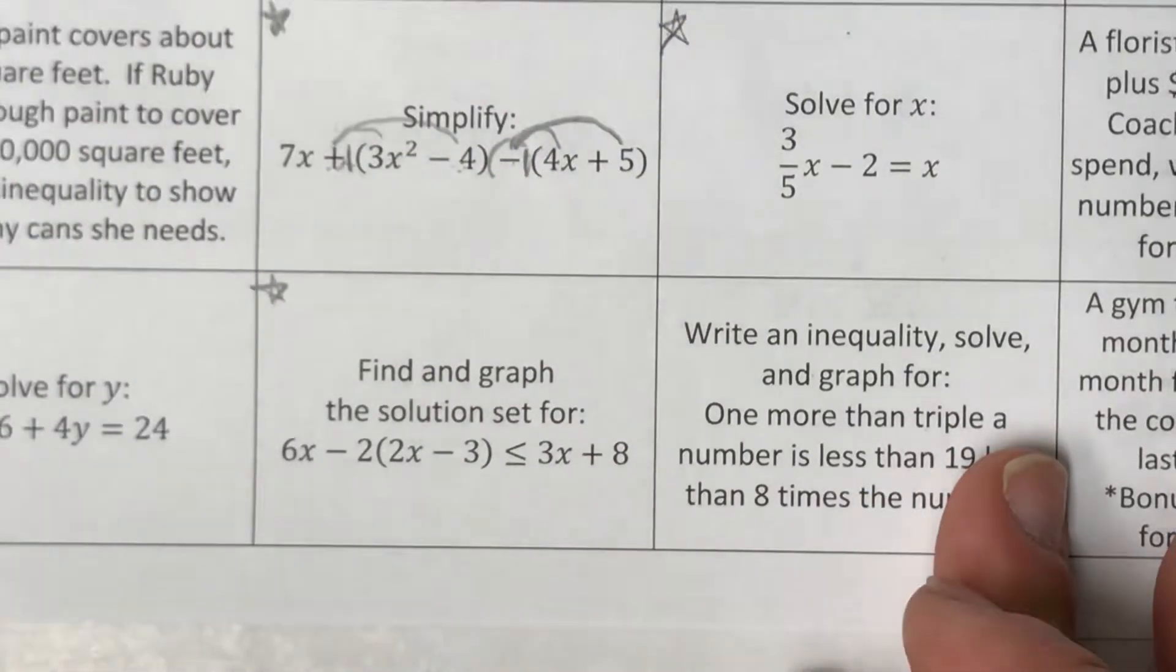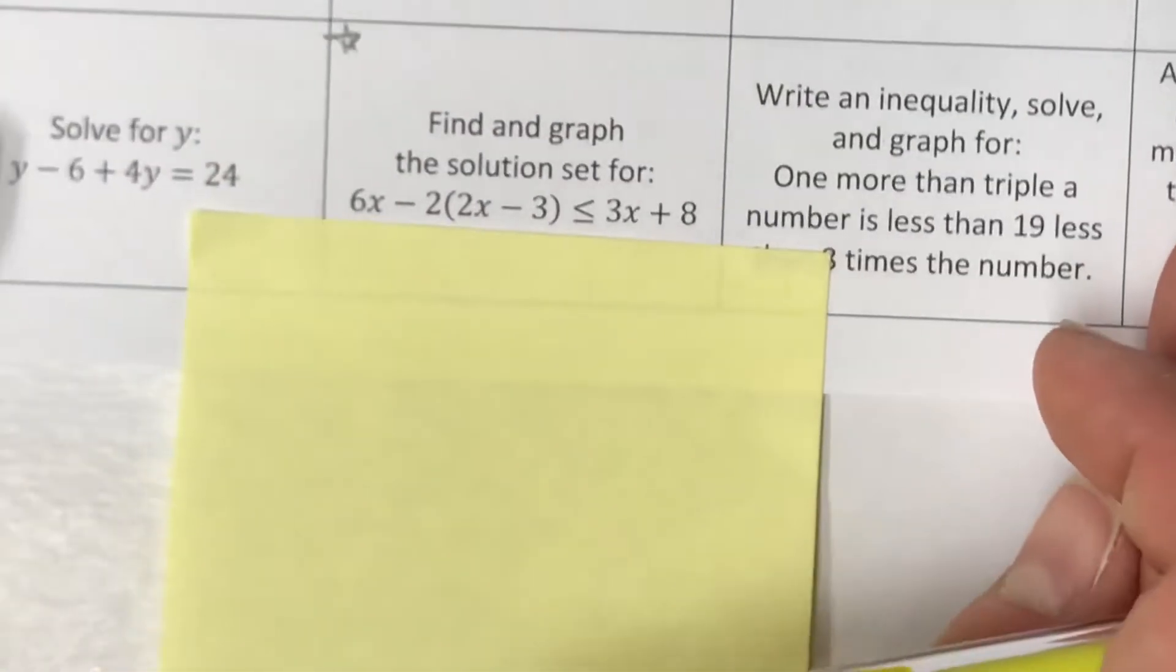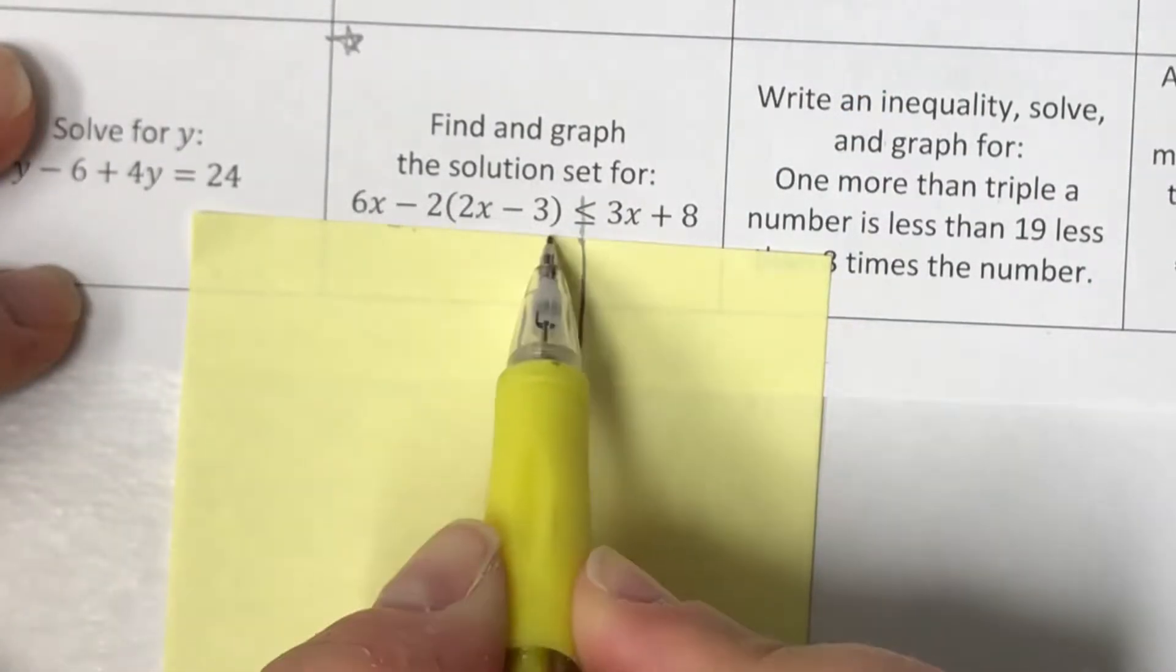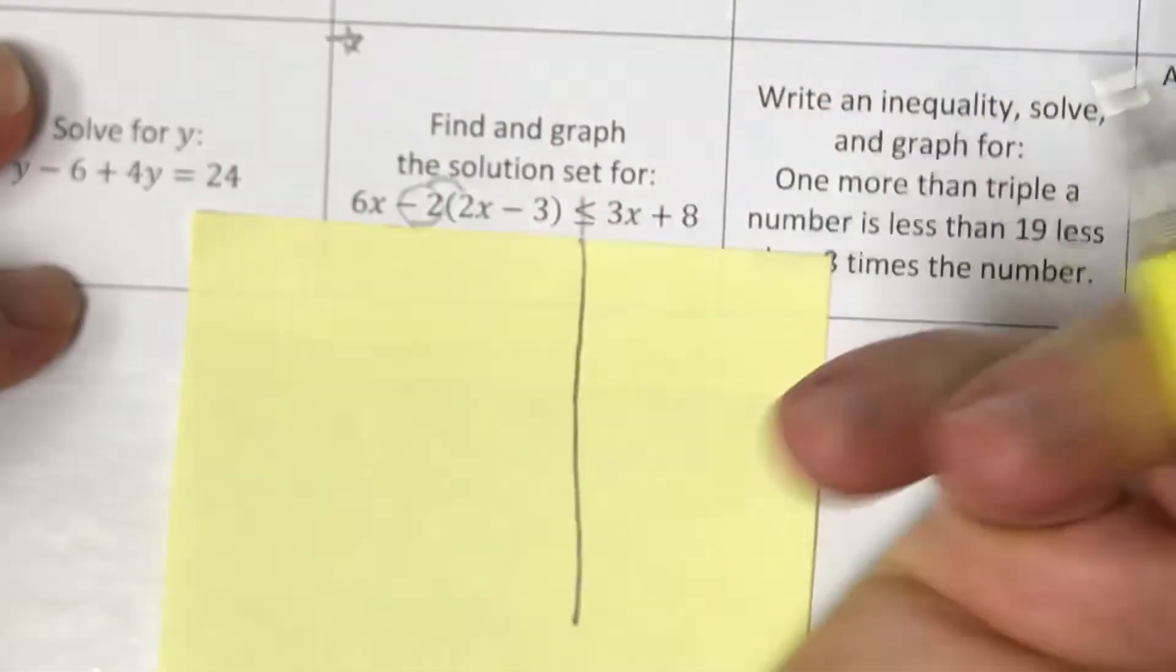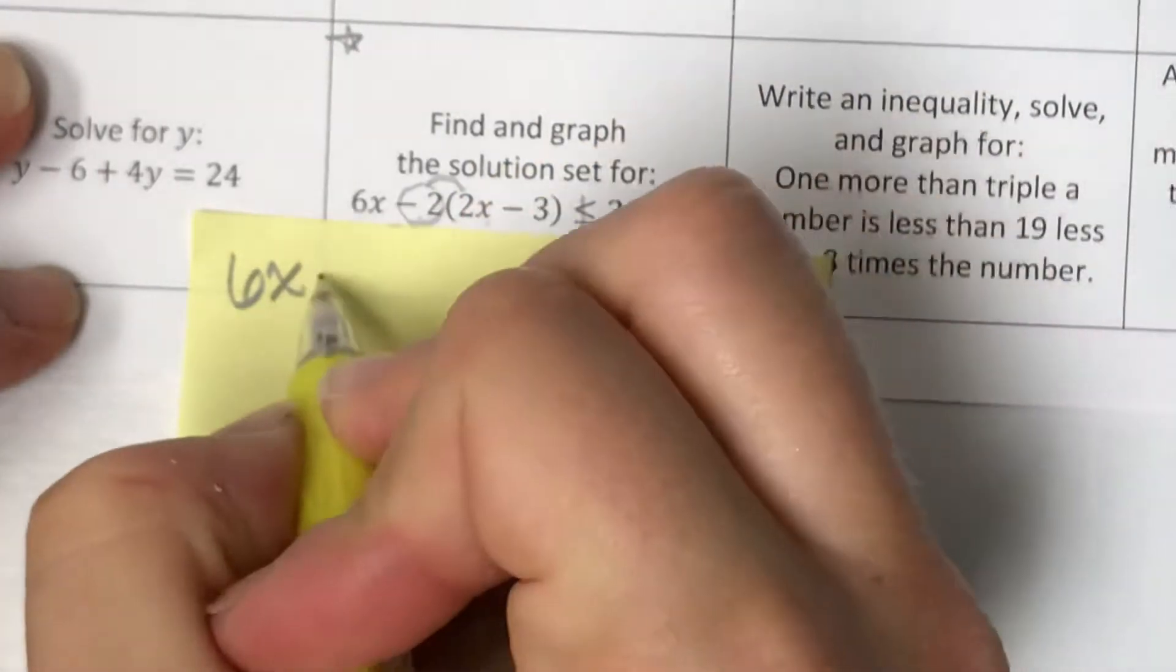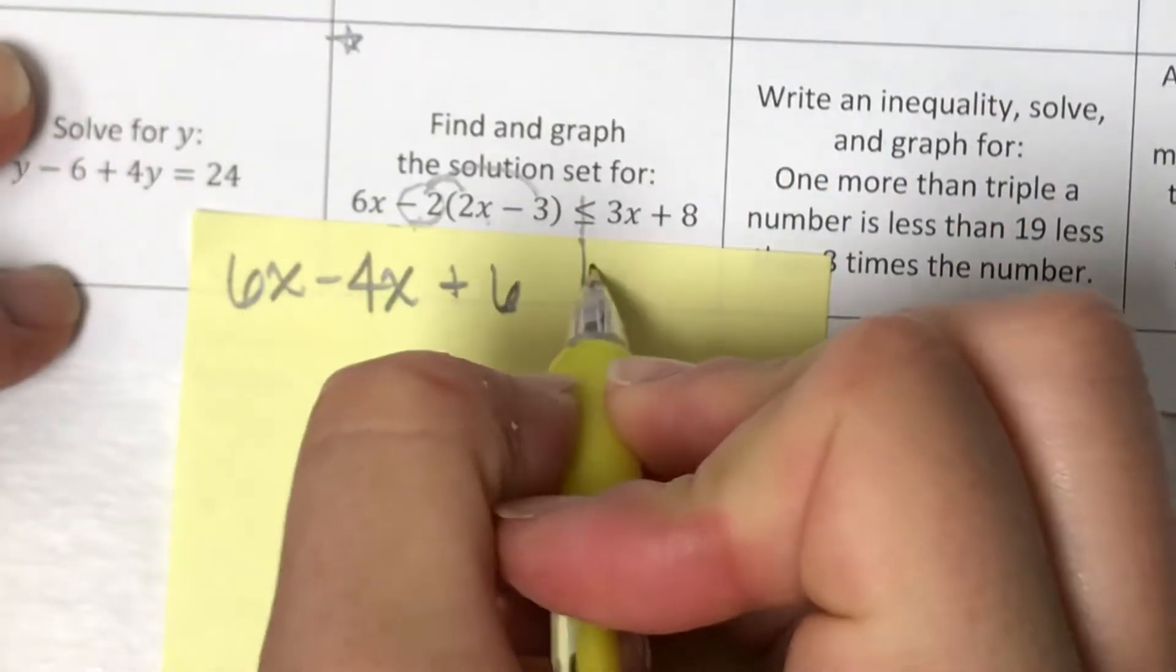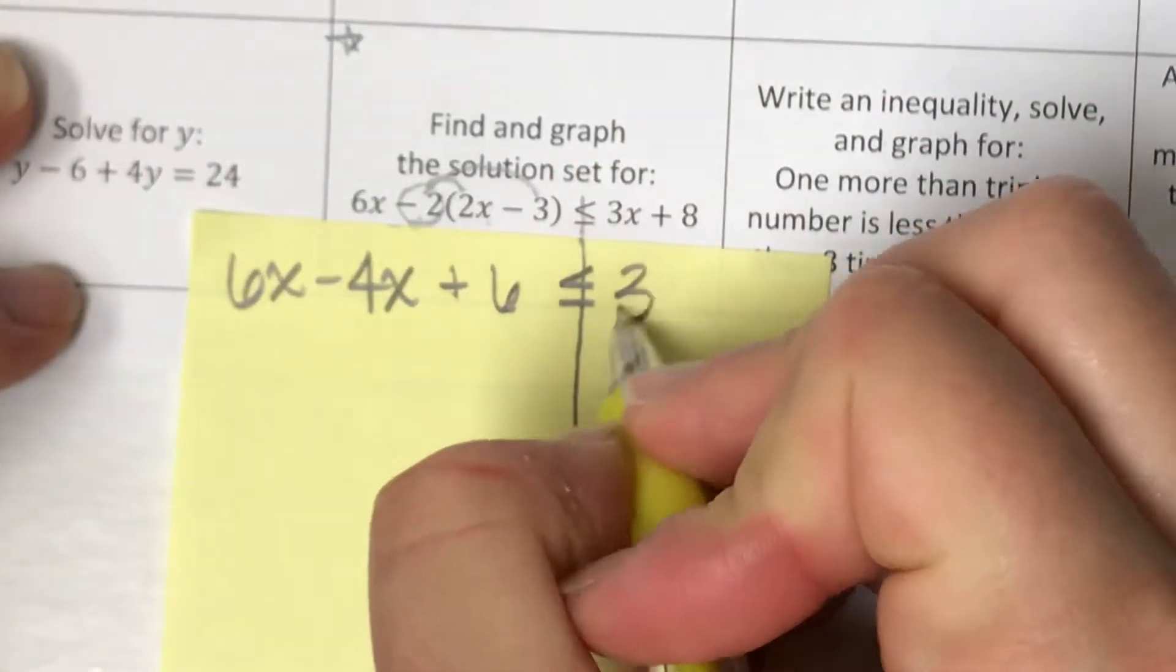Alright. Next one. Let's just keep going down the line. Kind of a complicated solution set of an inequality. Draw your line down through your equal sign. I'm going to simplify this as much as I can. So I see parentheses. I'm going to be distributing this negative 2. So the 6x is going to just stay out there. Negative 2 times 2x becomes negative 4x. Negative 2 times negative 3 becomes plus 6. I'm not going to change my symbol there. The right-hand side actually looks pretty good. It's pretty clean. So 3x plus 8.